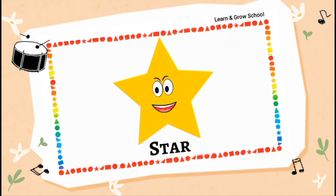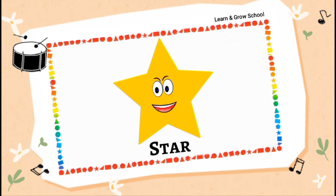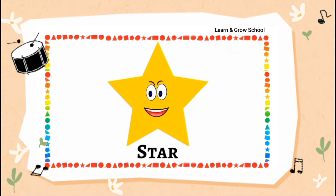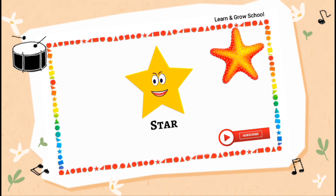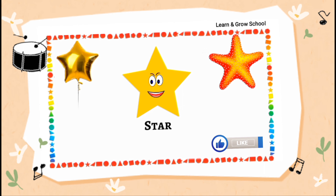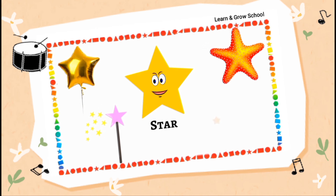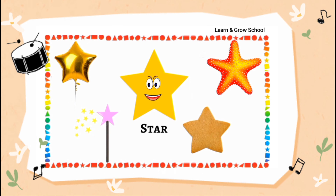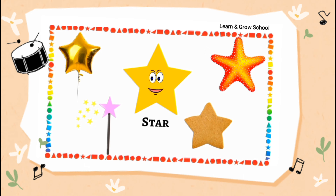I have 10 sides and 5 corners. You can see me in many things around your surroundings. For example, you can see me as a starfish. You can use me as a star balloon. You can see me in a magic wand. You can eat me as a star cookie. All these objects can be seen in the shape of a star.